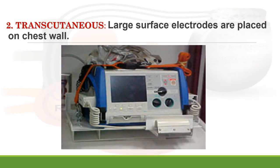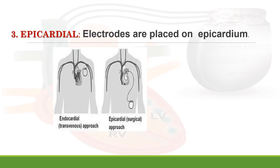The second type is transcutaneous pacing, where large surface electrodes are placed on the chest wall — that is, pacing is delivered through the external body. The third type is epicardial pacing, where electrodes are placed on the epicardium, either via an endocardial transvenous approach or an epicardial surgical approach. This is especially used for patients undergoing CABG.